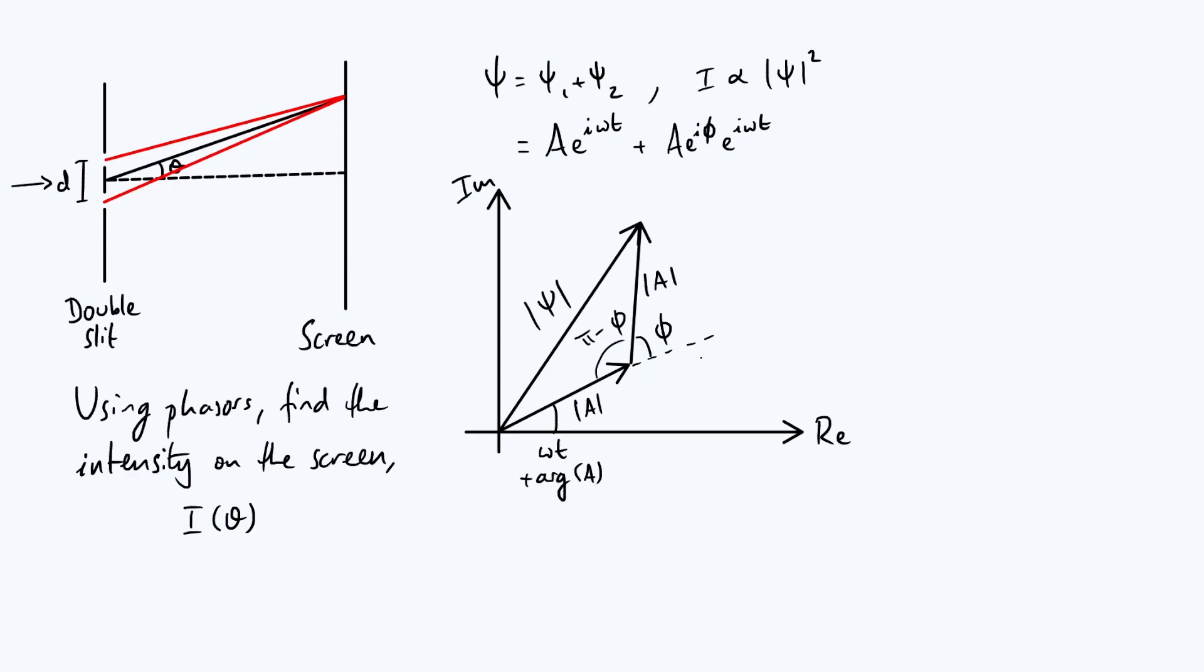Now if you've got a triangle and you know two sides and one angle and you want the third side, you can use the cosine rule to do that. So if you apply the cosine rule, you get modulus of psi squared is equal to, well, mod a squared plus mod a squared, so 2 mod a squared minus, and then 2 again mod a squared times the cosine of the angle between them, which is pi minus phi.